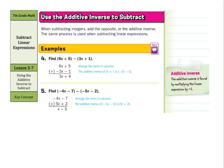Now, these next few examples are actually a little bit more complicated, where drawing models would have been very difficult. We've been using the additive inverse so far, where when subtracting integers, add the opposite or the additive inverse. The same process is used when subtracting linear expressions, and we've been doing that. Notice the 6x plus 5 stayed. They changed the subtraction to addition, and the opposite of 3x was negative 3x. And the opposite of plus 1 was minus 1. And 5 plus negative 1 was a positive 4. 6x plus negative 3x was just 3x.